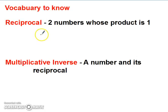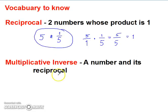For example, if you had 5 and 1 fifth, if you were to multiply, because that is product, so if you were to multiply 5 over 1, which is 5 as a fraction, times 1 over 5, you would end up with 5 over 5, which is 1. So this is an example of a reciprocal.